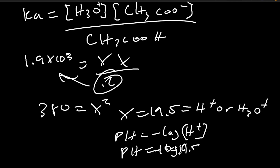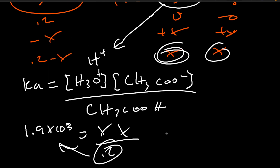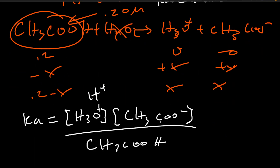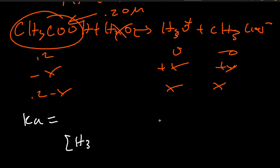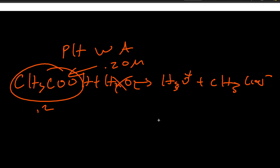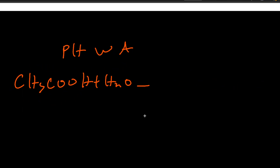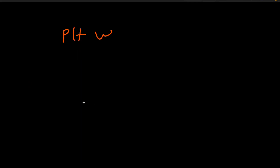pH equals negative 1.29. These numbers are wacky because I made them up, but you get the gist — that's how you find it. The weak base is the exact same process but for OH⁻, so we're not going to go over that separately.